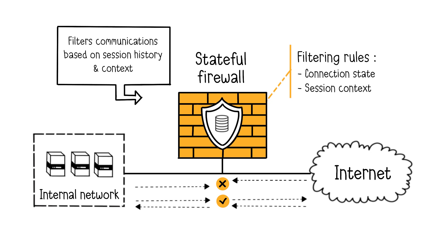The stateful firewall establishes links between the different packets flowing through the firewall and associates them to connection sessions. They are also able to link the packets and their responses in the opposite direction. These firewalls can remember significant attributes of each connection, constituting a connection state, and verify traffic against their state table. Stateful firewalls associate new connection requests with existing authorized connections. If a connection is authorized, all packets in the exchange are implicitly accepted. The firewall can make filtering decisions based on information accumulated from previous connections rather than solely on rules defined by administrators.